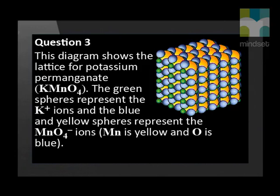Question 3. This diagram shows the lattice for potassium permanganate, KMnO4. The green spheres represent the K+ ions and the blue and yellow spheres represent the MnO4- ions. Mn is yellow and O is blue.